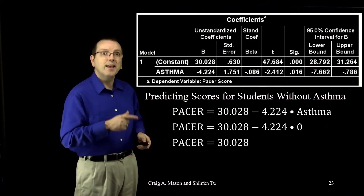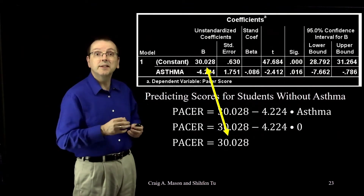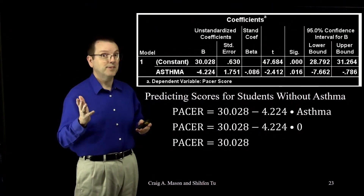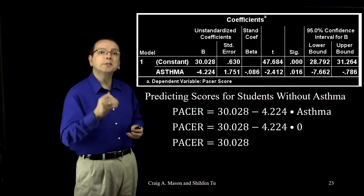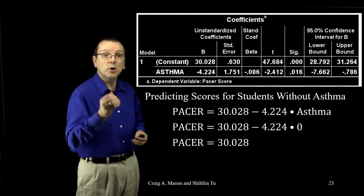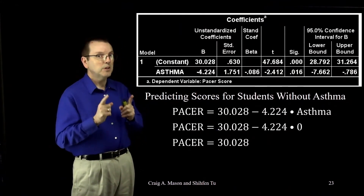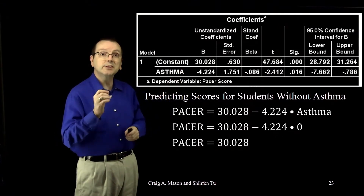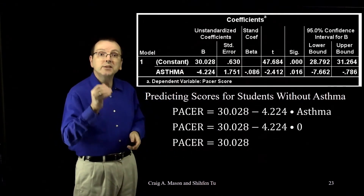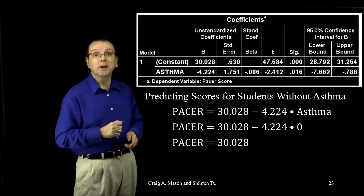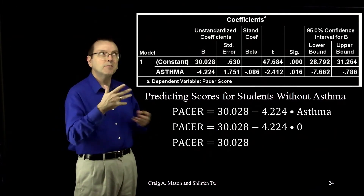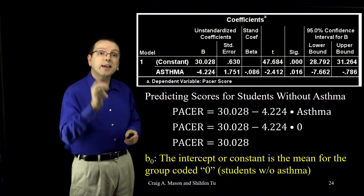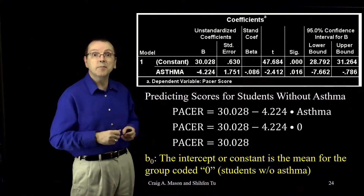You can see that the intercept, or constant, is the predicted PACER score for students without asthma. More generally, the intercept is the predicted score for the group coded zero. And if we remember back to the t-test analysis, 30.028 was also the mean for students without asthma. Because we're not controlling for anything else in this simple model, the intercept is the mean for the students coded zero on our dummy variable.